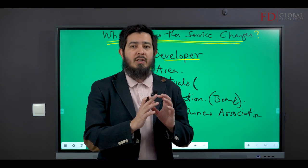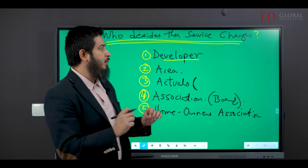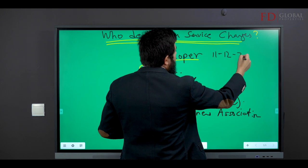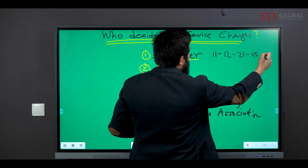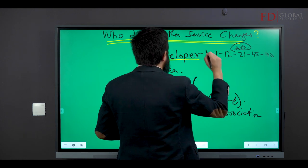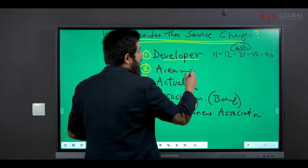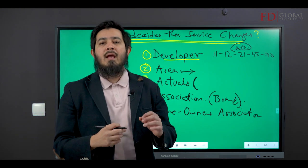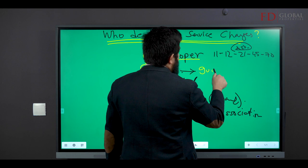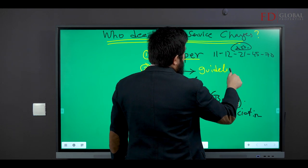They give a guideline on what the service charge should be - it could be 11, 12, 21, 45, 70 per square foot. That's AED dirhams per square foot. It depends on the area. Every area has a guideline. This isn't written in stone - RERA doesn't do this, but we already know.